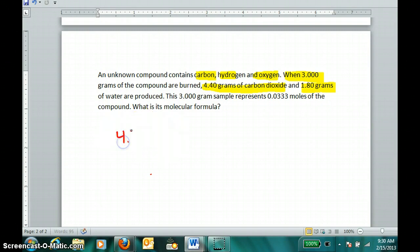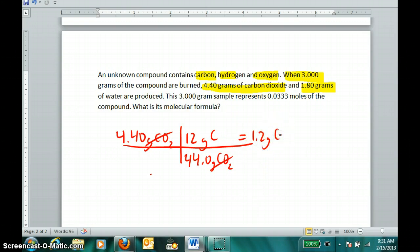If we get 4.40 grams of carbon dioxide, I know only a small part of that mass is actually the carbon in CO2. The formula for carbon dioxide tells me that 12 grams are carbon out of every 44 grams of CO2, meaning our compound contained 1.2 grams of carbon. Likewise, if we got 1.80 grams of water produced, and we know 2 parts are hydrogen out of every 18 parts of water, the compound must have contained 0.20 grams of hydrogen.